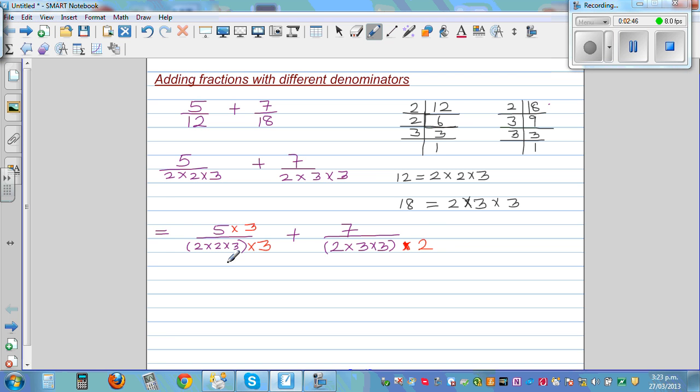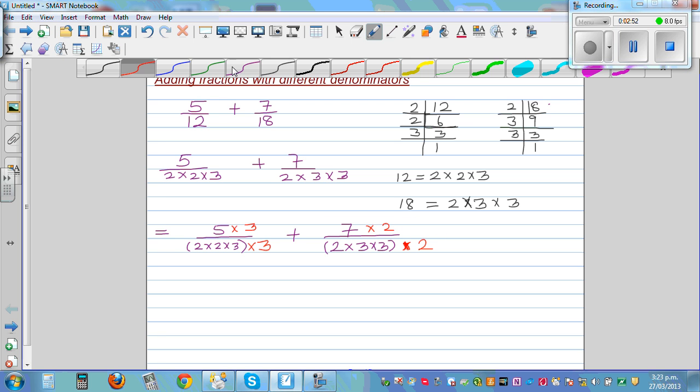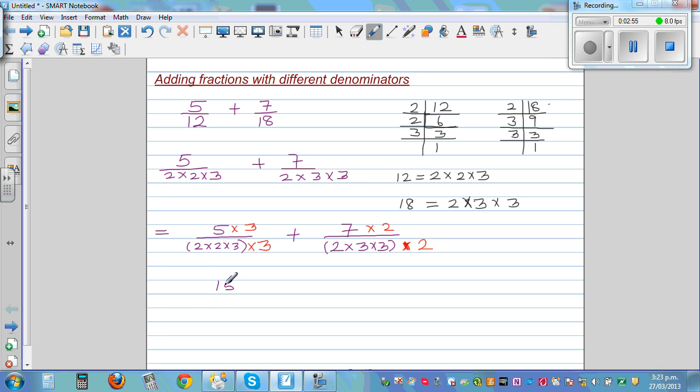So can you see, both of them have the same denominator. If you multiply this by 2, you have to also multiply this by 2. So let me write the next step. So this is 15 over 2 times 2 times 3 times 3, and this is 14 over 2 times 2 times 3 times 3.